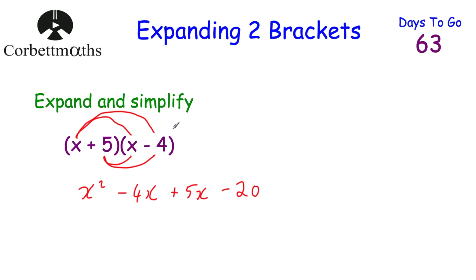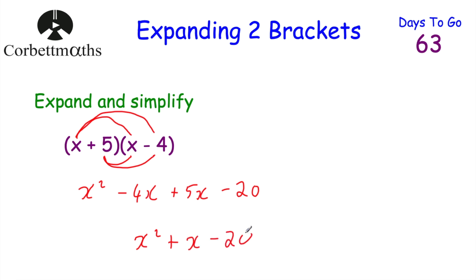The question said expand and simplify. Looking at the middle terms, we've got minus 4x plus 5x — minus 4 x's plus 5 x's gives 1x, so just x. The answer is x squared plus x minus 20.